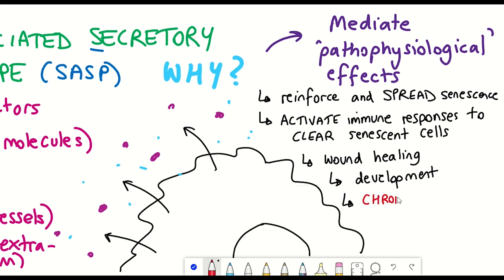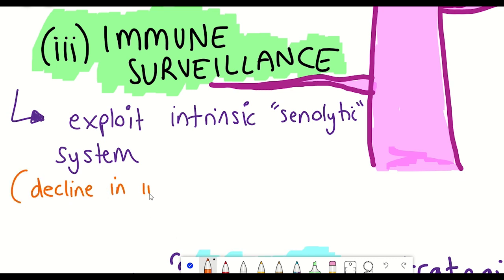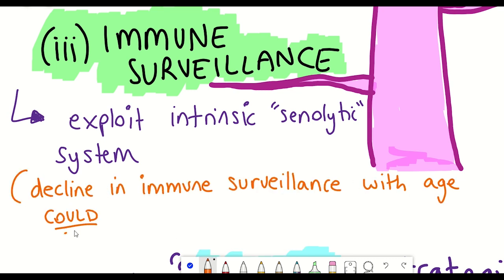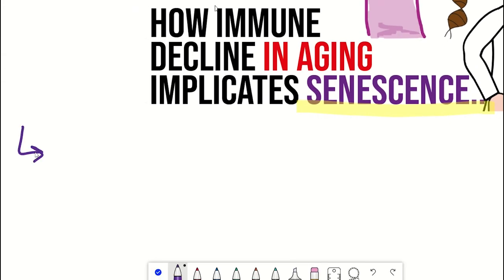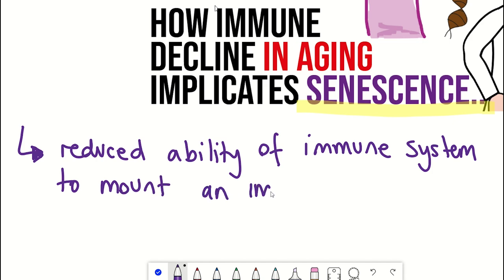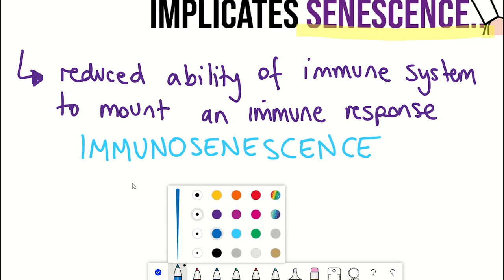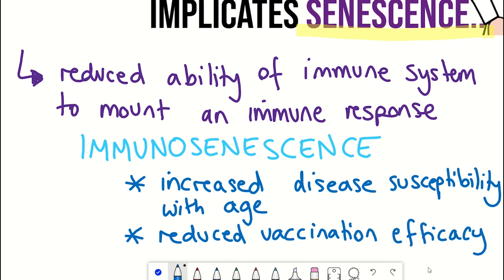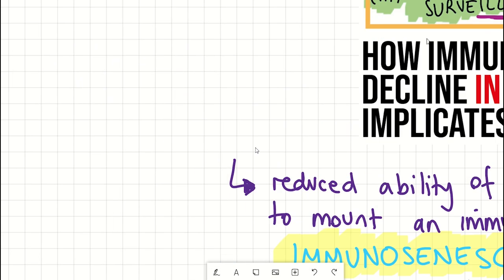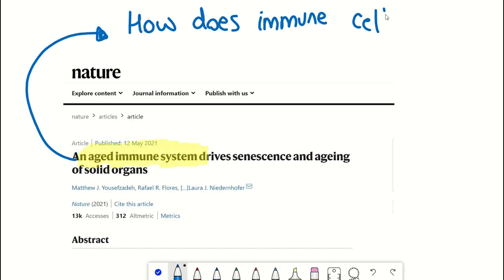If the cells aren't cleared, it could result in chronic inflammation with deleterious pro-aging effects. This immune-mediated clearance is known as immune surveillance, and one reason senescent cells increase with age is due to a decline in immune system activity — referred to as immunosenescence — which is thought to explain age-dependent increases in disease susceptibility and reduced vaccine effectiveness. This first study wanted to further explore the impact of immune system ageing on organismal ageing.